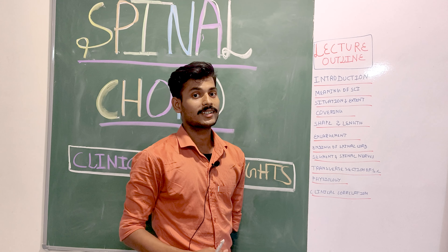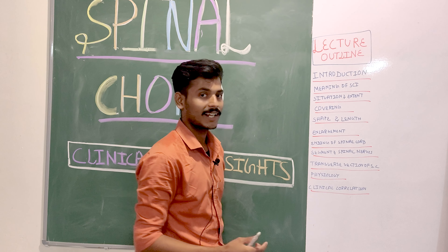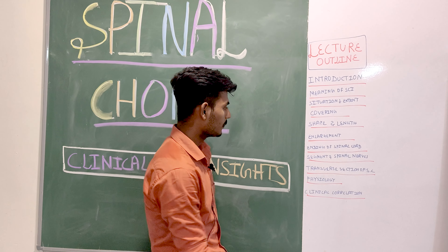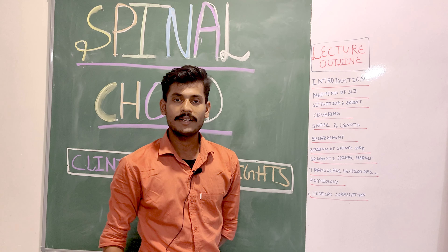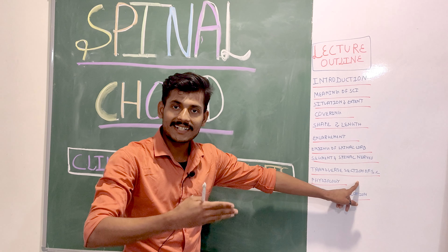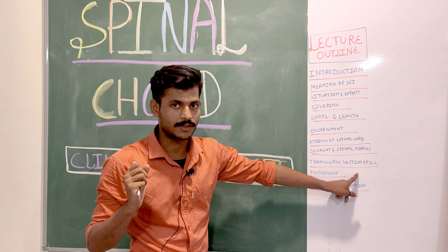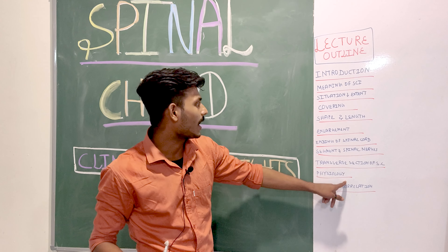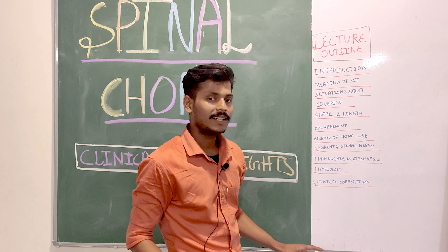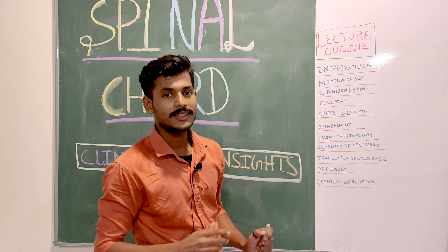We will discuss the shape and enlargements of the spinal cord, since it shows some variation in its anatomical shape. Then we will discuss the ending of the spinal cord, its segments and spinal nerves, the transverse section, its physiology, and finally some clinical correlations.